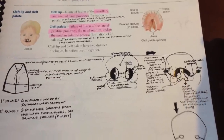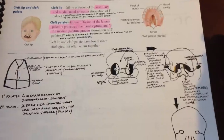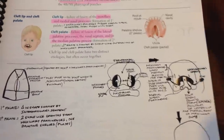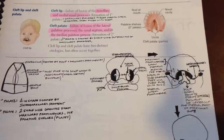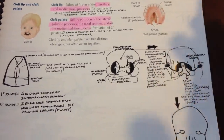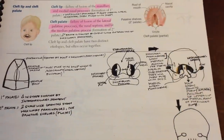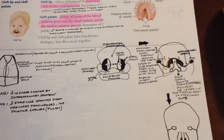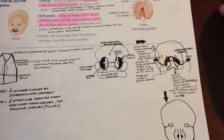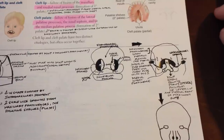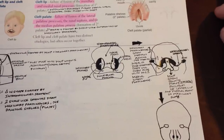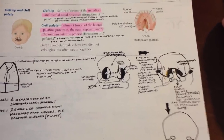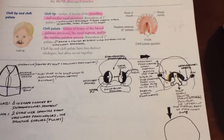Today we're going to quickly review cleft lip and cleft palate. These are important because if you're thinking about a subspecialty like plastic surgery you're going to need this embryology, and more importantly for your Step 1 exam they prefer to connect embryological development and pathology in relevant clinical vignettes, so this is something they can definitely use.